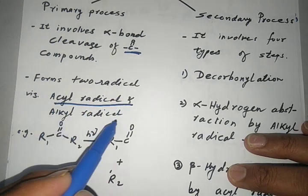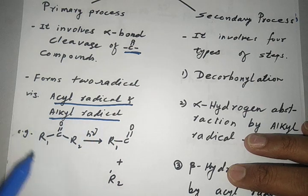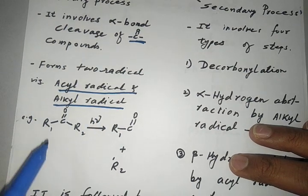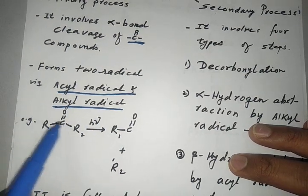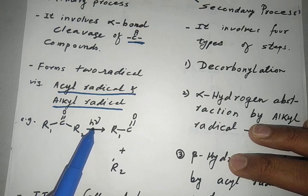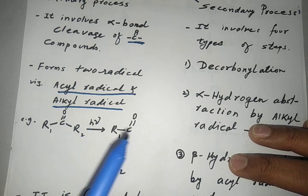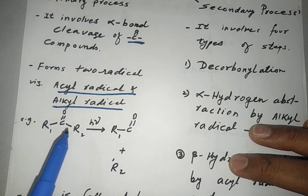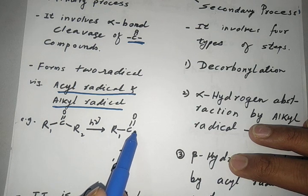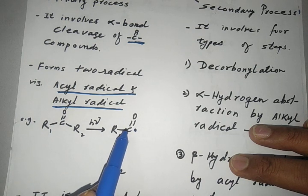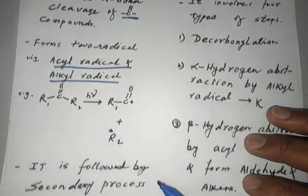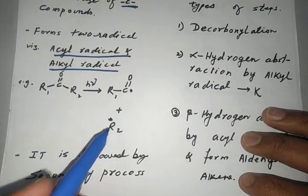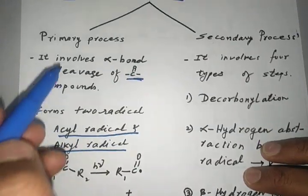After cleavage, two radicals are formed: one is called the acyl radical and the other is called the alkyl radical. For example, a carbonyl compound on irradiation first goes to the singlet state, then undergoes intersystem crossing to the triplet state, and after that cleavage occurs, forming these two radicals — the acyl radical and the alkyl radical.